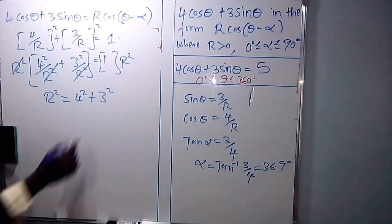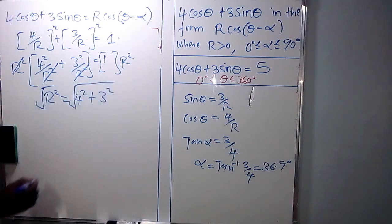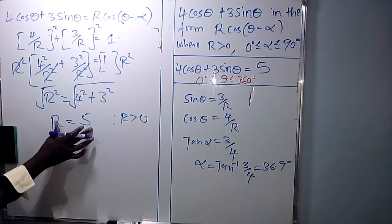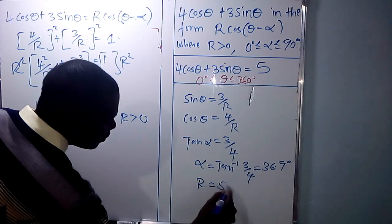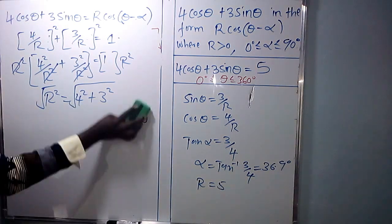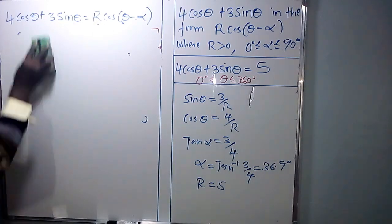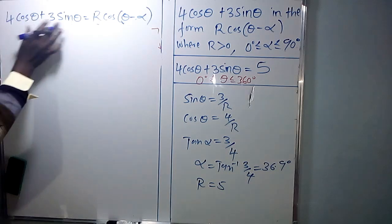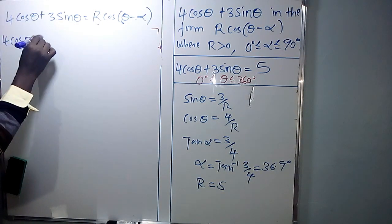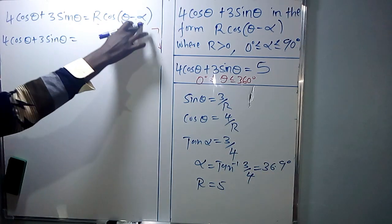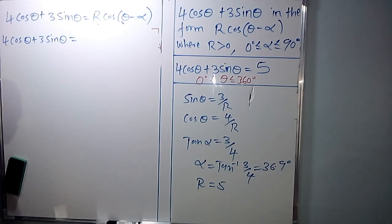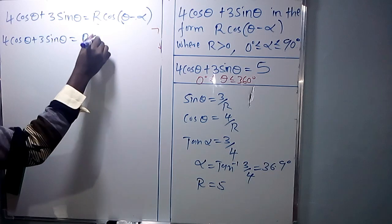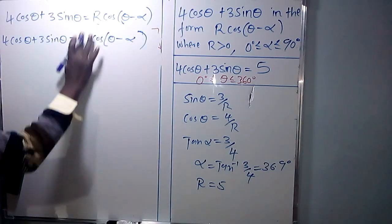To get R, take the square root of both sides: R equals the square root of 4 squared plus 3 squared, which is plus or minus 5. But since R is greater than 0, R equals 5. So we can now express 4 cos theta plus 3 sin theta in the form R cos(theta minus alpha) by substituting R equals 5 and alpha equals 36.9 degrees, giving 5 cos(theta minus 36.9°).